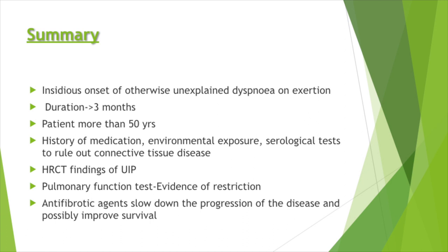To summarize, a patient over 50 years presents with insidious onset of otherwise unexplained dyspnea on exertion for more than three months. History of medication and environmental exposure is taken, serological tests are done to rule out connective tissue disease, HRCT reveals usual interstitial pneumonia, and pulmonary function tests reveal restriction — leading to a diagnosis of idiopathic pulmonary fibrosis. A timely diagnosis will help the clinician initiate anti-fibrotic agents to slow down disease progression and possibly improve survival.